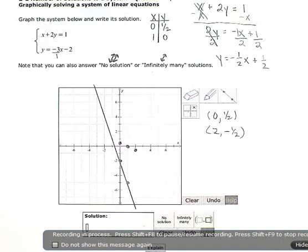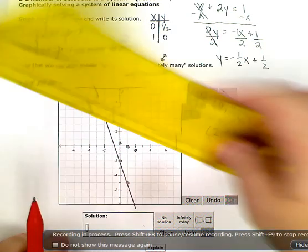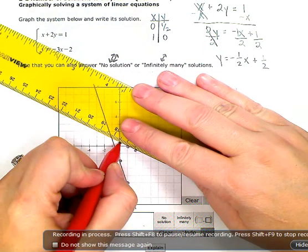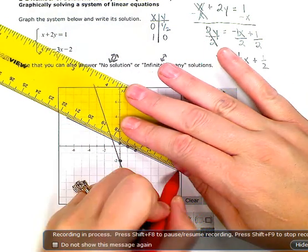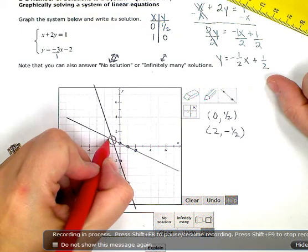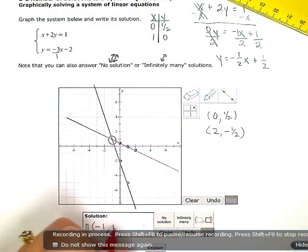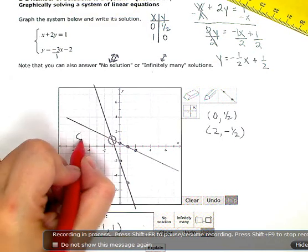And once you have those in a couple of points there, you can draw in your line. And we're looking for this point right there where the two lines cross. So my solution down here, you're going to click this right here so it'll let you put in a coordinate pair. And we're going to put in negative 1, positive 1. Those are the coordinates of that point right there.